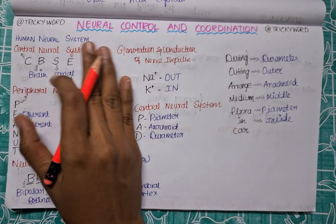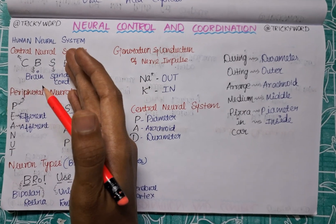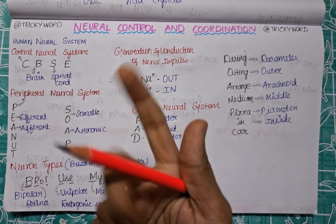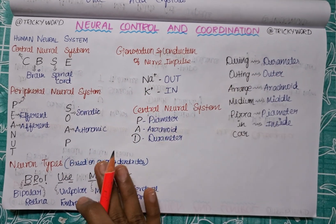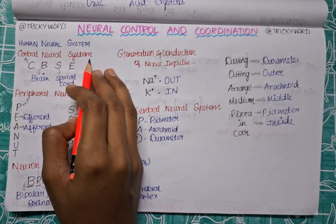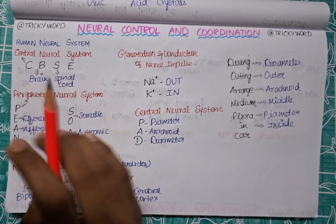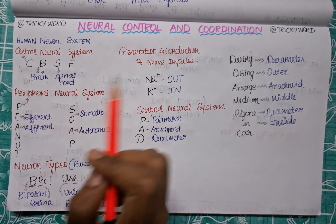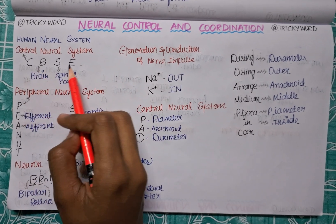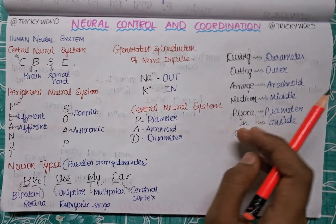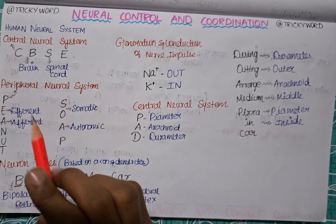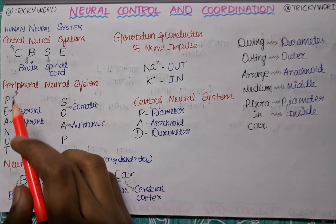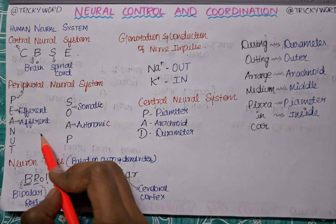The first lesson will be for the human neural system. The human neural system is divided into two parts: the central neural system and the peripheral neural system. The trick for central neural system is CBSE — C is for central neural system, B is for brain, and S is for spinal cord. So the central neural system consists of brain and spinal cord.